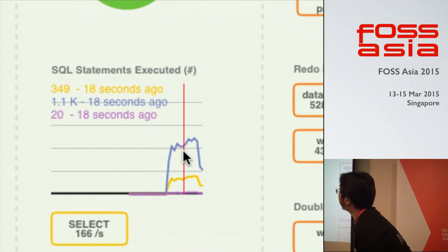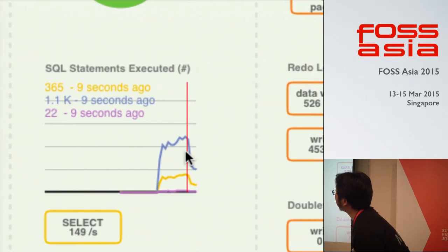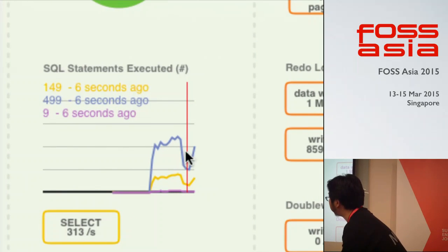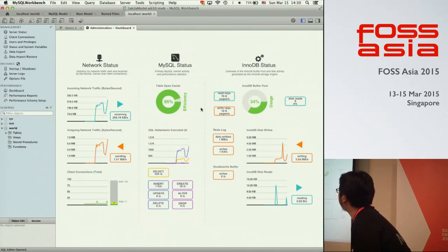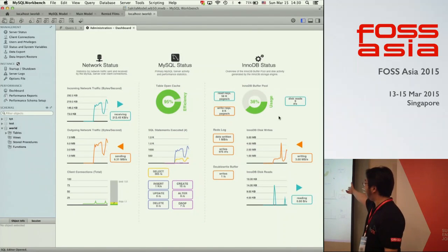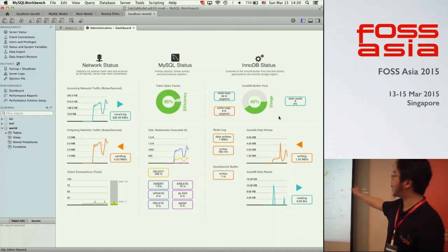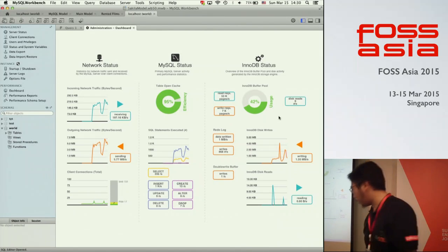This screen is a bit light, so some numbers may not be visible here, but you can see it clearly on your own screen. You can see how much table cache is used, table open cache used, data buffer usage, read log operations, and so on — all from this single MySQL Workbench screen.